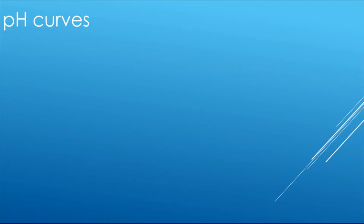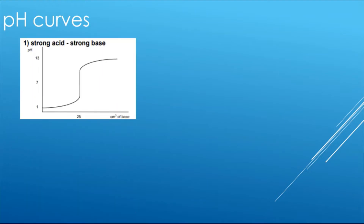Looking into pH curves, there are four main types you need to be aware of. Starting with a strong acid and a strong base being added to that strong acid. If we have a strong acid in the flask, we're starting with a very low pH of around 1 to 2, and we end up at a very high pH of around 13 to 14, with neutralization occurring around pH 7.